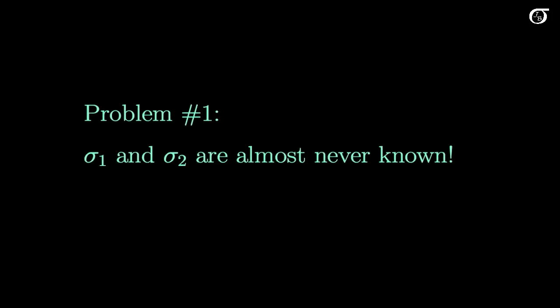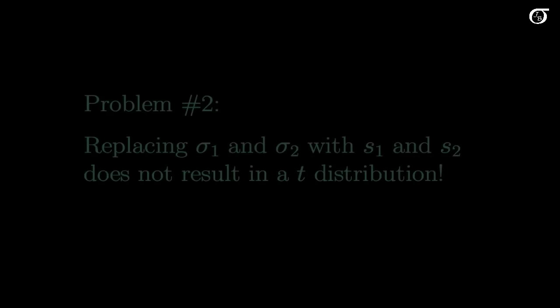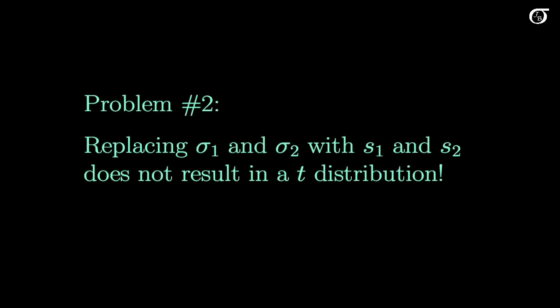We won't do an example with the z procedure here, because we don't usually do it this way — we don't know the true population standard deviations σ1 and σ2. How would we know σ1 and σ2 if we don't know μ1 and μ2? It's a very rare case. In the one-sample case, we simply replaced the population standard deviation with the sample standard deviation and used a t-distribution. But here, replacing σ1 and σ2 with sample standard deviations does not actually result in a t distribution — that's one of the classic problems in statistics.